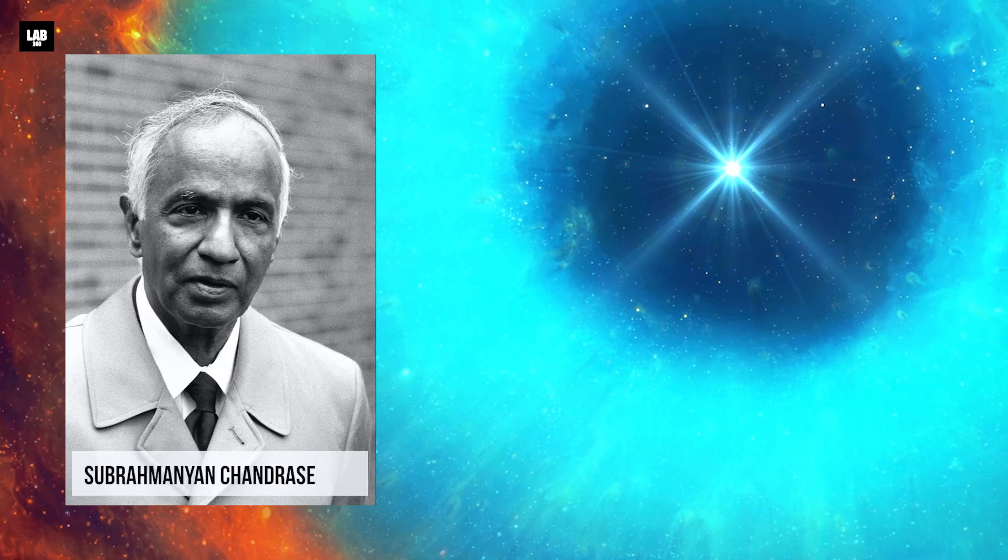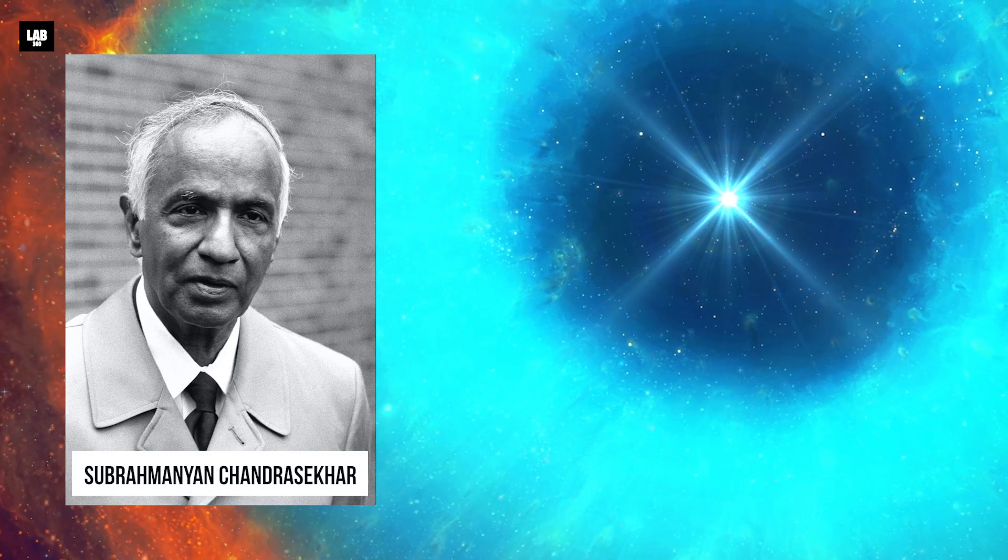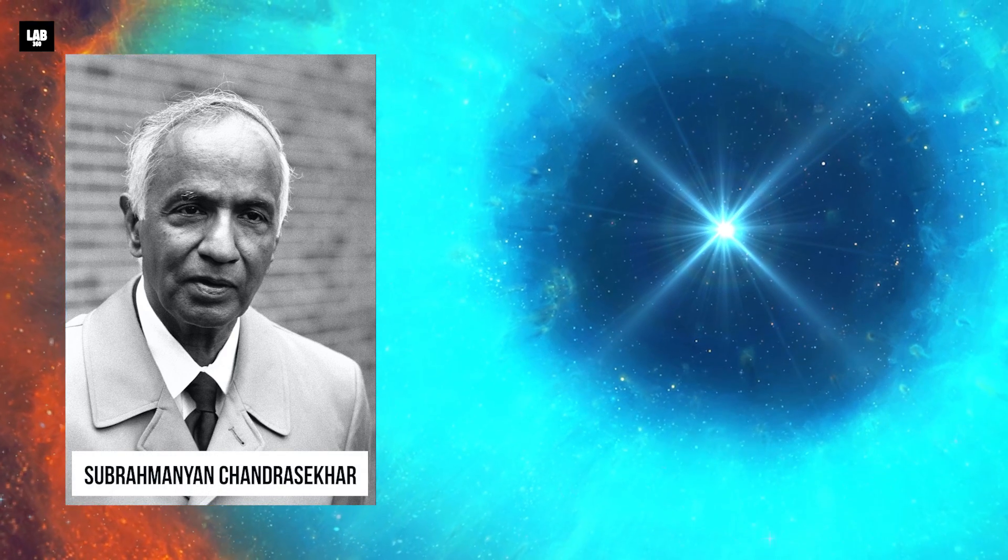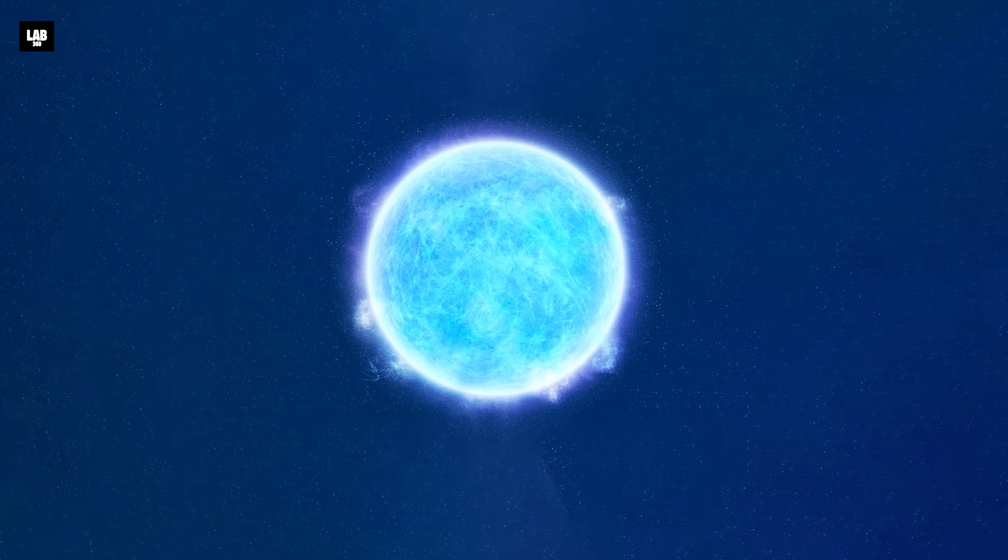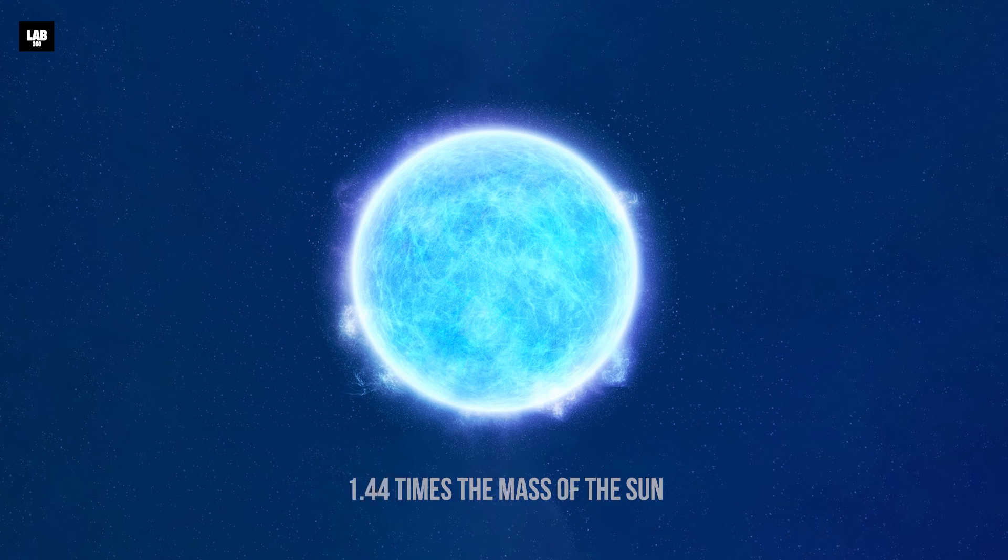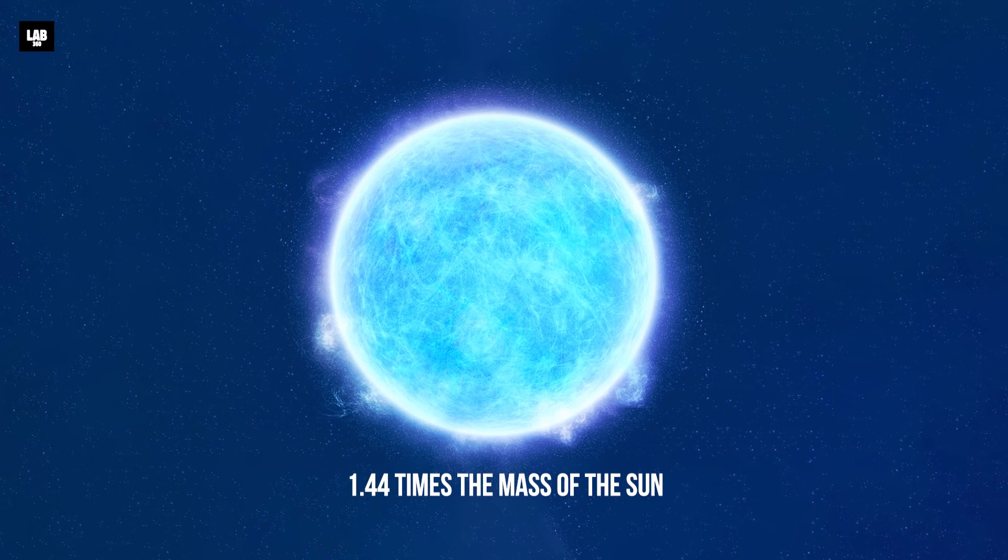Subrahmanyan Chandrasekhar, an Indian-American physicist, gave an upper limit on the mass of white dwarfs. He worked out that a white dwarf which weighs more than 1.44 times the mass of the sun won't be able to hold against gravity and will explode as a supernova.